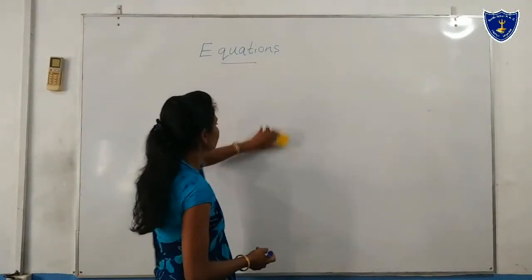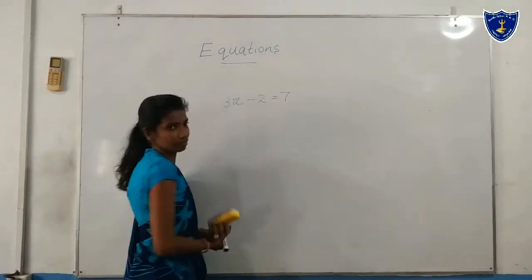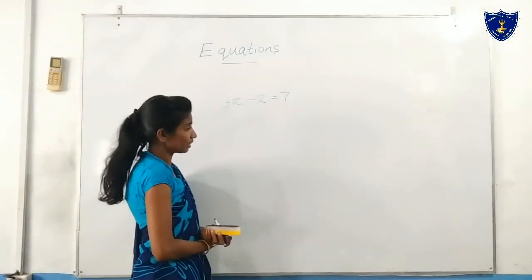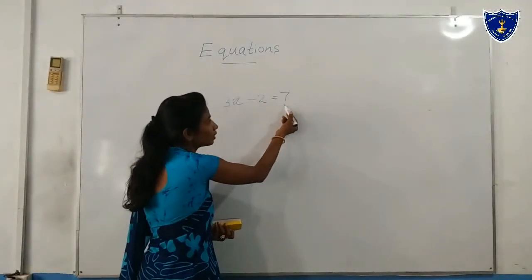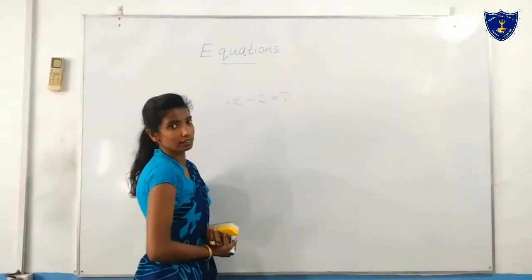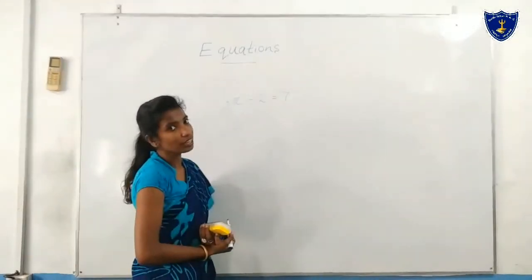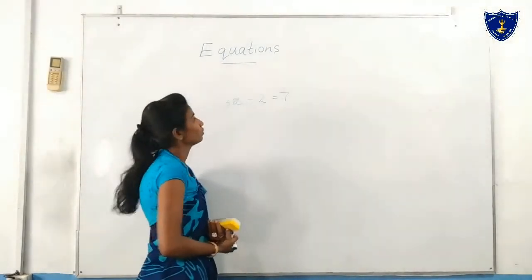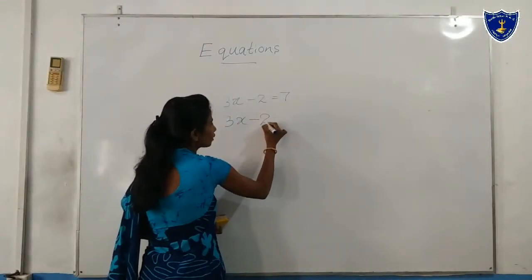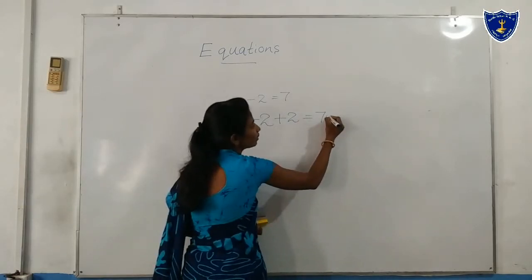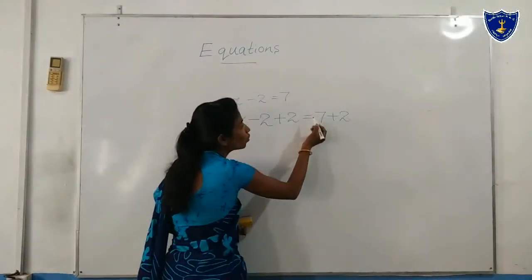Shall we move to another example? 3x minus 2 equals 7. Here we can see 3 terms: 3x is one term, subtract 2 is another term, and 7 is another term. We can see subtract 2 — how do we remove that? We add 2 to both sides: 3x minus 2 plus 2 equals 7 plus 2.